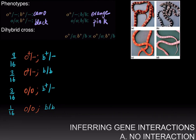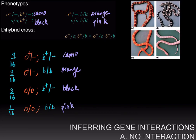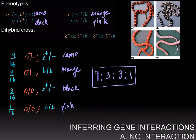We can then annotate the phenotypes: nine-sixteenths are camouflaged individuals, three-sixteenths are orange, another three-sixteenths are black, and one-sixteenth of the individuals are the double mutant, or pink. Therefore, when there is no interaction between two genes controlling the same trait — in this case, the pigmentation of the corn snake — you get a 9:3:3:1 ratio of the four phenotypes.